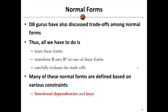What we need to do next is to learn the normal forms — what they are, what properties work for each normal form, and how to transform a relation into the desired form. We also need to carefully evaluate the trade-offs between redundancy reduction versus the queries to be done later. Many of these normal forms are defined based on various constraints, like functional dependency and keys. Therefore, before we talk about the normal forms, we have to talk about functional dependency and keys first.